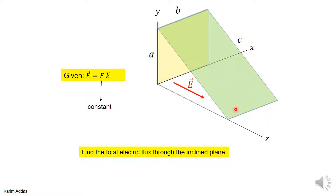By definition, by the way we constructed this inclined surface, every field line that goes through it also goes through the back surface. So from an intuitive standpoint we expect the flux to be the same. Now let's see how this works out mathematically.